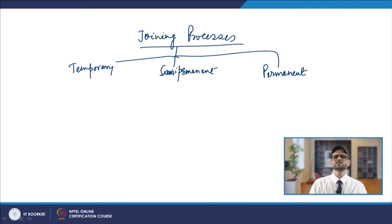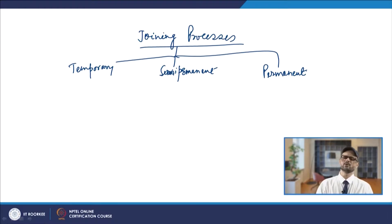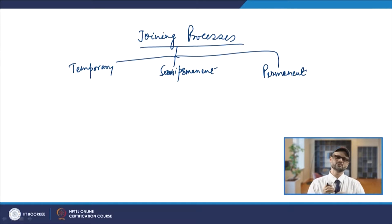In a semi-permanent joint, when you dismantle the parts, your parent metal is not lost but the medium with which you joined is lost. A typical example is rivets — when you remove riveted plates, the rivet material is gone. Then comes the permanent joint, where if you try to separate them there is loss to both sides, because the joining is at the molecular level and both materials are altered.